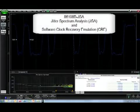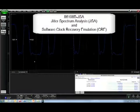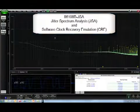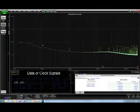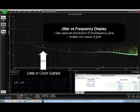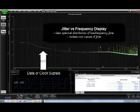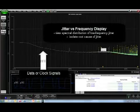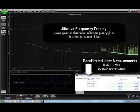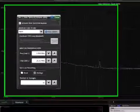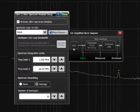The 86108B option JSA provides jitter spectrum analysis and software clock recovery emulation capability. Using a real-time acquisition system inside the clock recovery circuit, the 86108B can measure and display the jitter spectrum of a data or clock signal. Similar to phase noise plots from a spectrum analyzer, these spectral views provide valuable insight into jitter and can help track the root cause of excessive jitter to a reference clock.